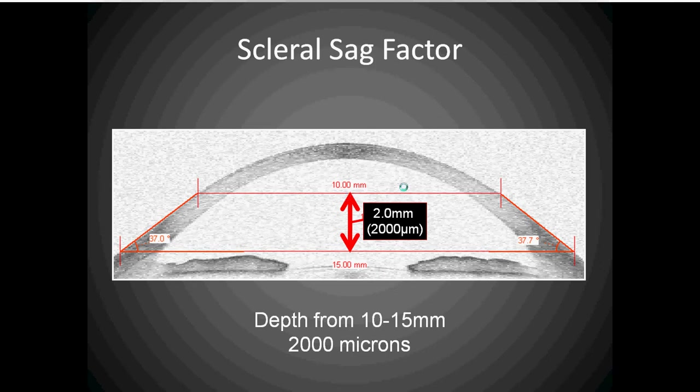However, if the angle of the peripheral cornea and sclera that forms between the 10 to 15 millimeter cord is higher or lower than that average 38 degrees, then the scleral sag factor may not be accurate for 100% of eyes.